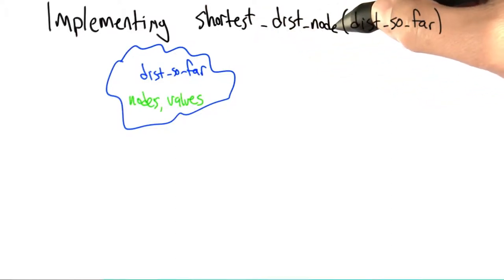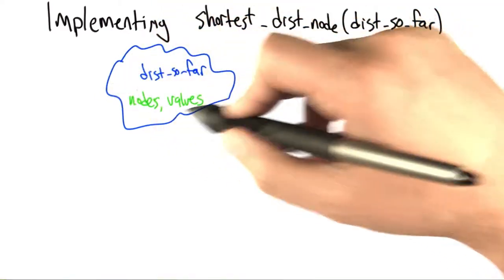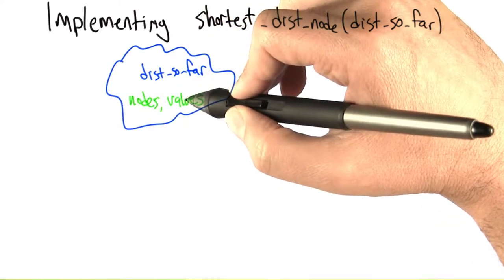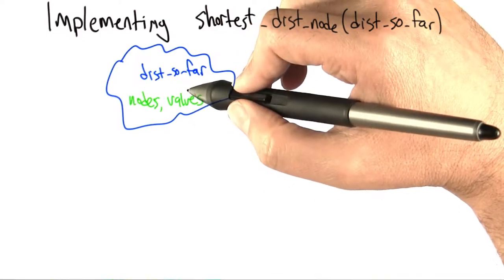Let's talk about how we might implement the shortest dist node function. We give it all the distances we've calculated so far for all the nodes that we could do that for. That's just a big pile here. There's a bunch of nodes and for each node we have some value. A lot of these values are temporarily assigned. They may actually change later.